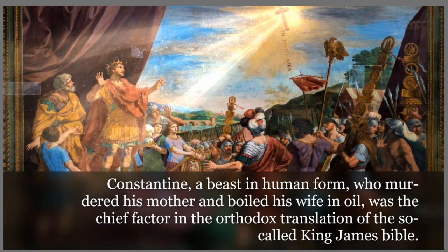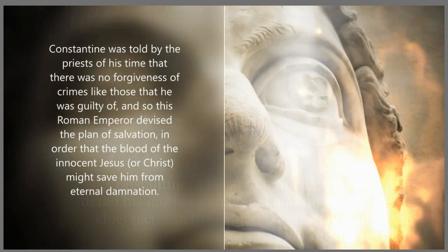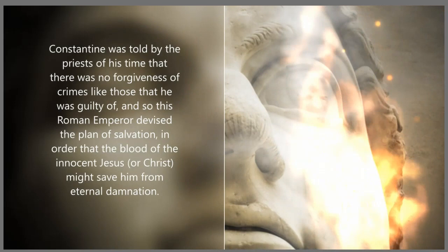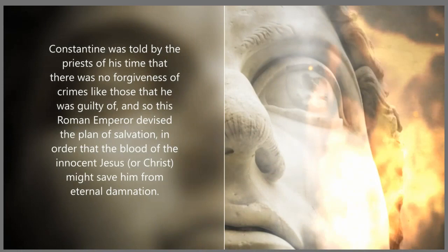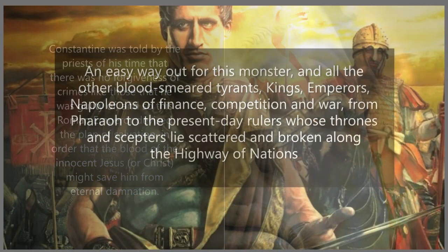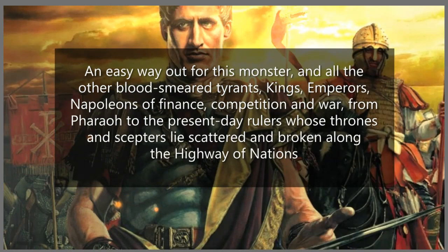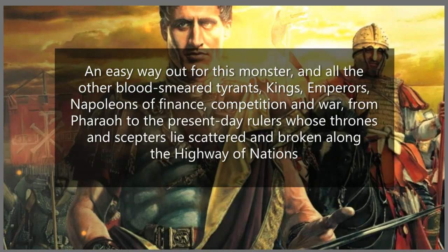Constantine, a beast in human form, who murdered his mother and boiled his wife in oil, was the chief factor in the orthodox translation of the so-called King James Bible. Constantine was told by the priests of his time that there was no forgiveness of crimes like those that he was guilty of, and so this Roman emperor devised the plan of salvation in order that the blood of the innocent Jesus, or the Christ, might save him from eternal damnation — an easy way out for this monster, and all other blood-smeared tyrants, kings, emperors, Napoleons of finance, competition, and war. From Pharaoh to the present-day rulers, whose thrones and scepters lie scattered and broken along the highway of nations.